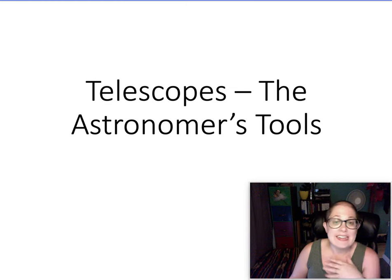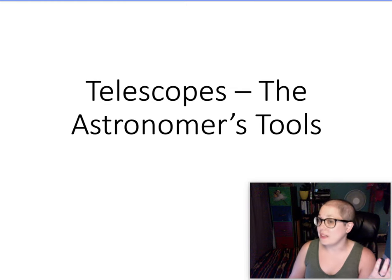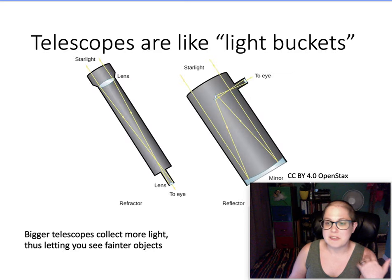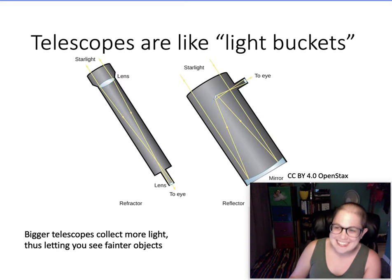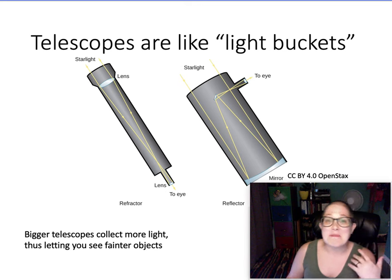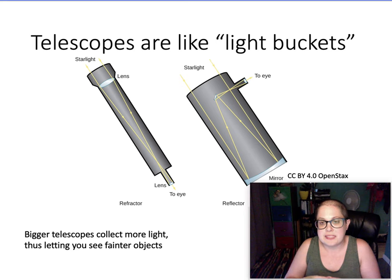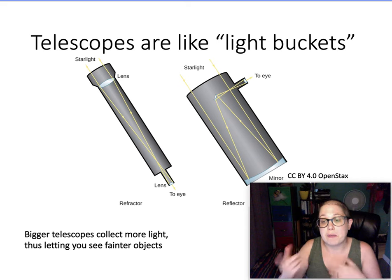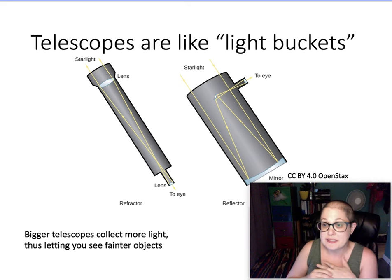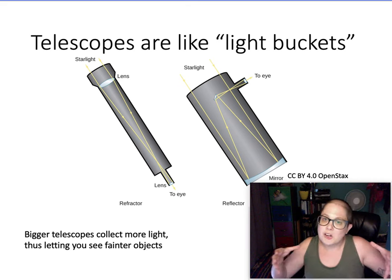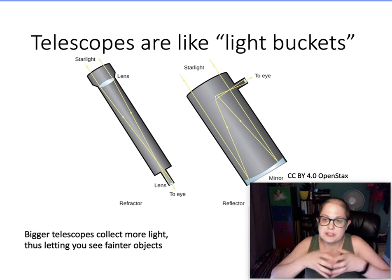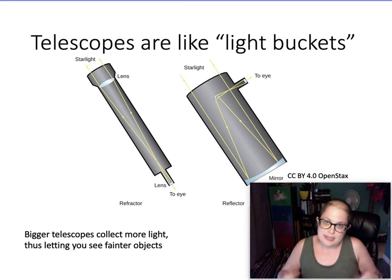At its simplest, you can think of a telescope as a light bucket. Many of us fondly refer to our telescopes as light buckets. This is a good analogy because you can think of the size of the telescope as one of the most important features — by size I mean the size of the primary lens or primary mirror. The bigger the telescope, the more light it can collect.